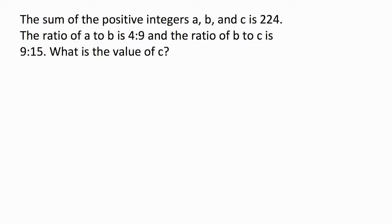The sum of positive integers A, B, and C is 224. The ratio of A to B is 4 to 9, and the ratio of B to C is 9 to 15. What is the value of C?